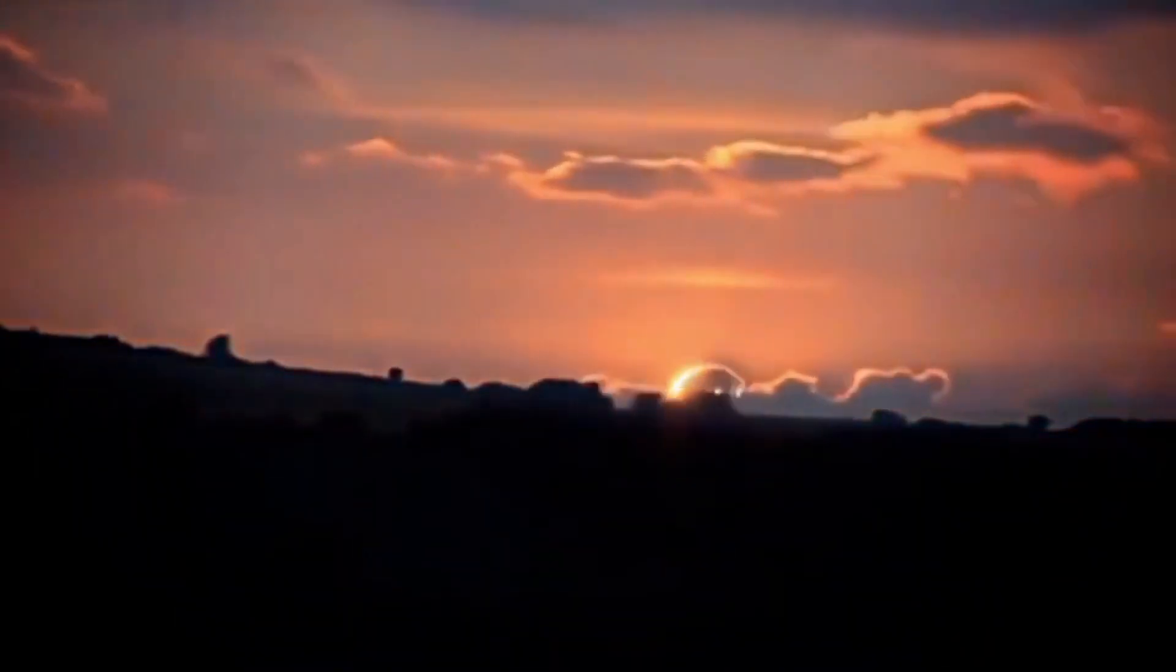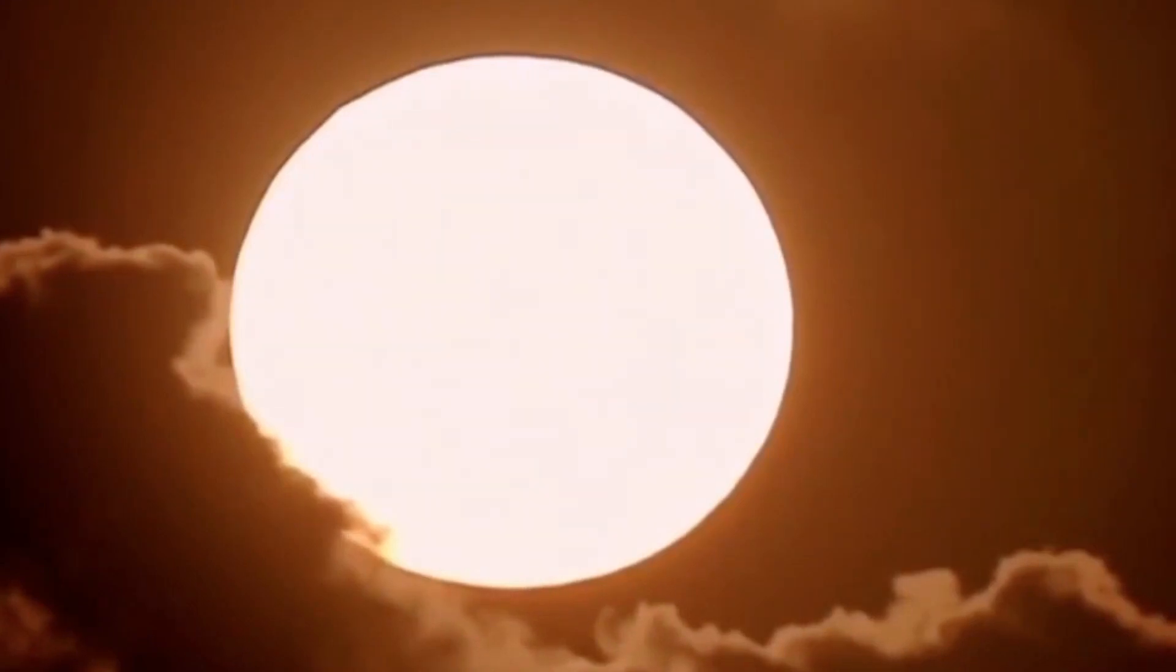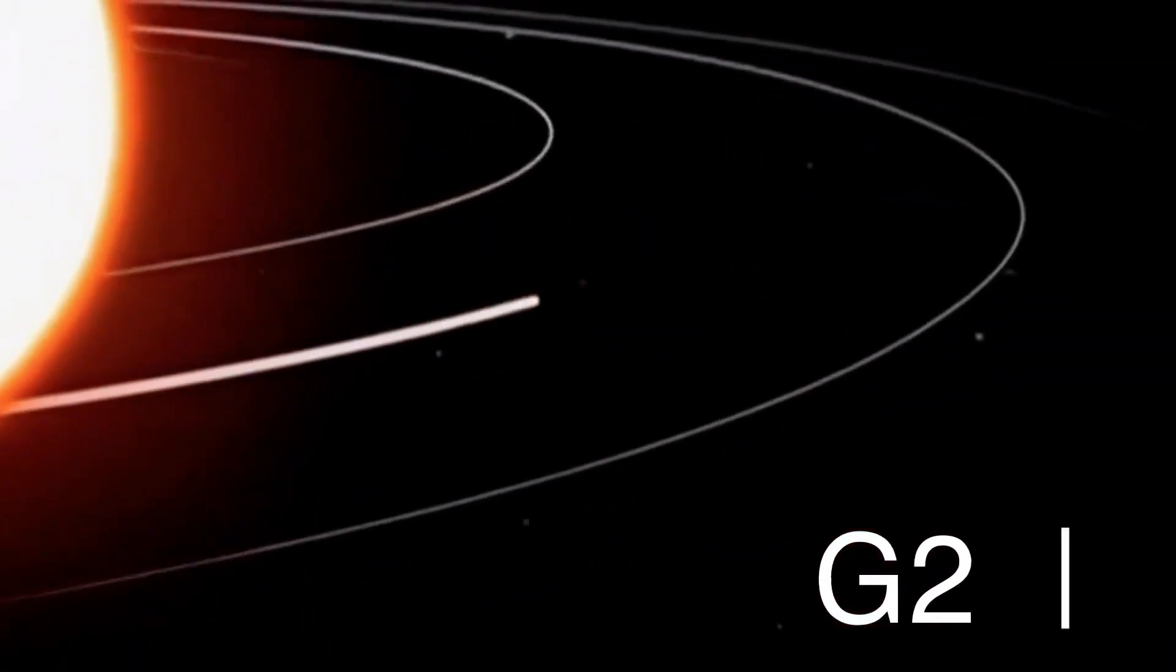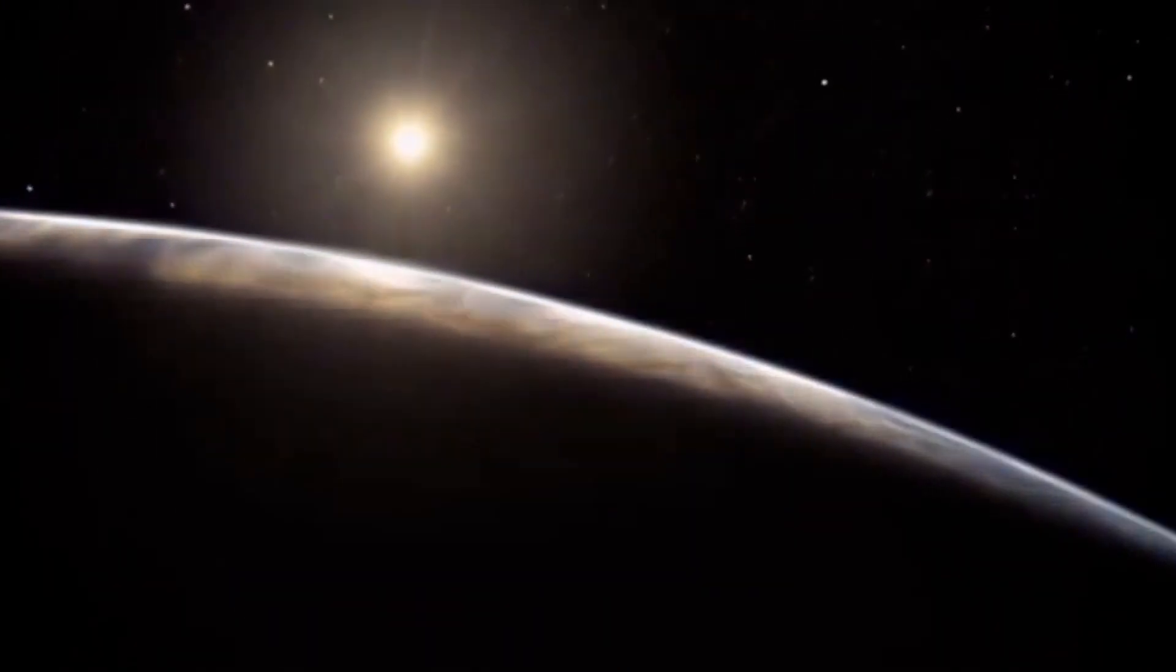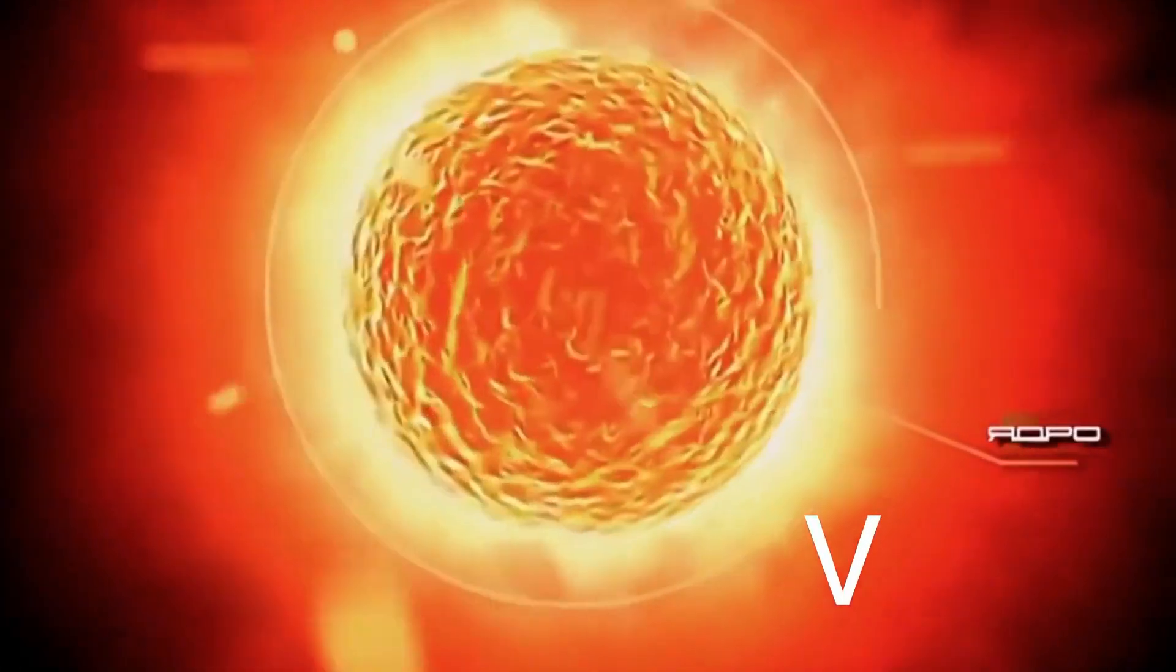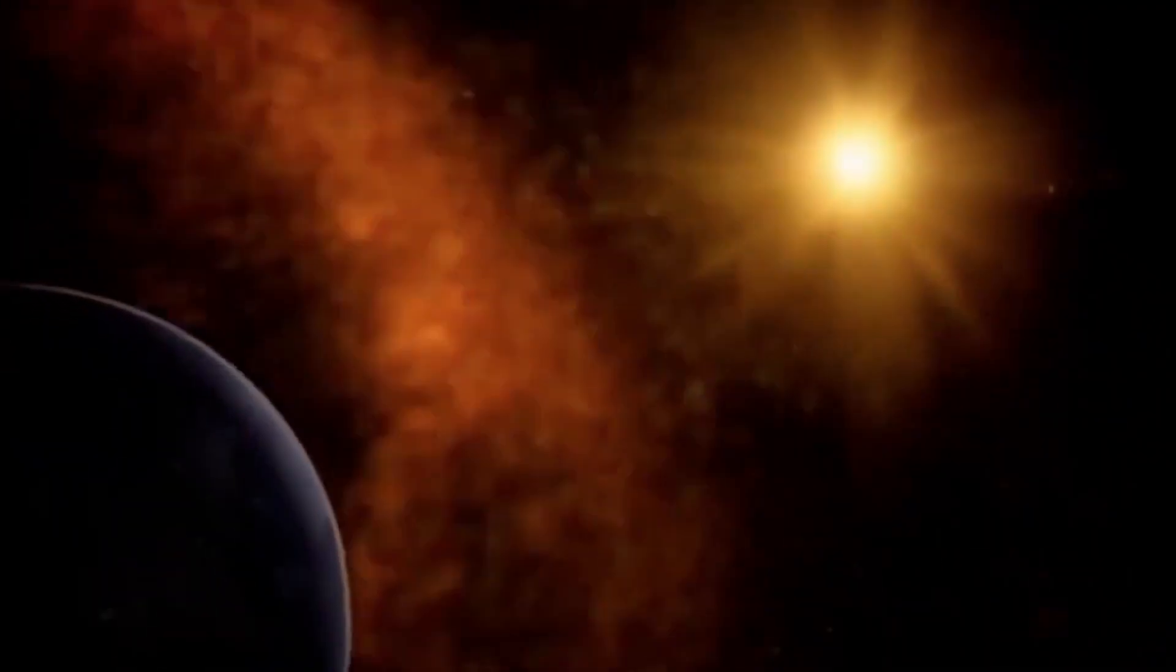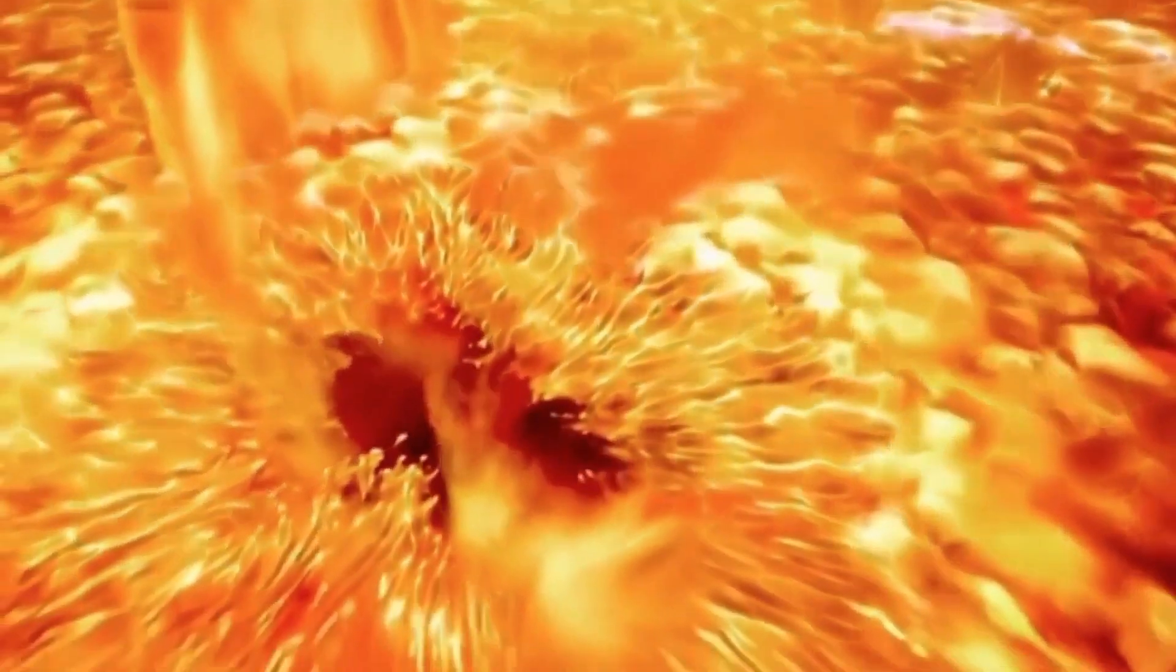The sun is a G2V type star, also known as a yellow dwarf. The designation G2V indicates that it belongs to the second subcategory of yellow stars of class G with a surface temperature of about 9,980 degrees Fahrenheit. The letter V indicates that the sun belongs to main sequence stars. The sun is the largest object in our solar system. Its radius is approximately 432,288 miles from the center to the surface, and the mass of the sun accounts for 99.86% of the entire mass of the solar system.